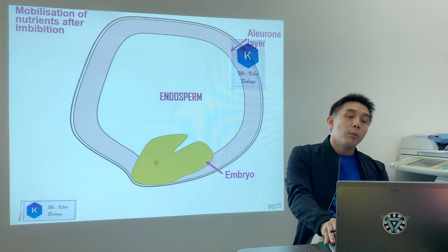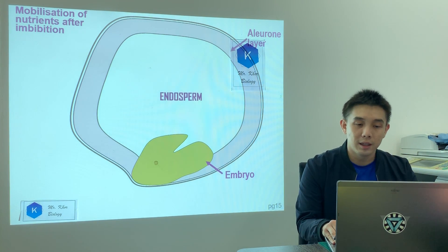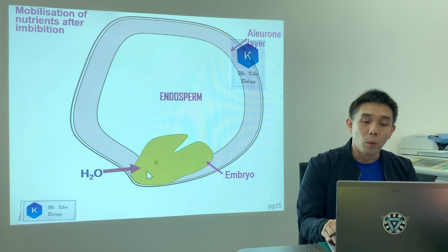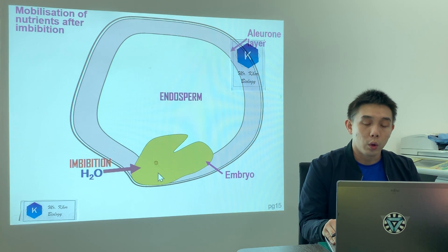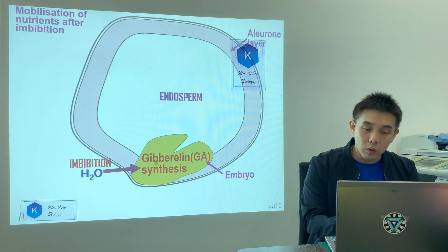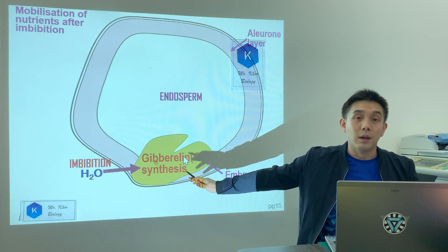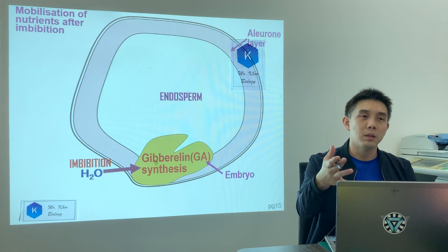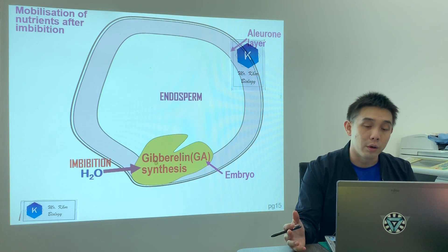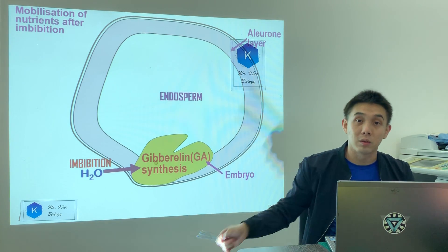First point: water enters the embryo — this is called imbibition. This water is used for gibberellin synthesis. Gibberellin is a plant hormone. For example, it is used for bolting and to promote elongation of roots. Besides auxin, the major plant hormone you must know is gibberellin.